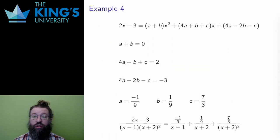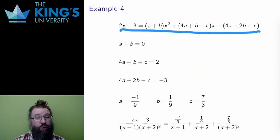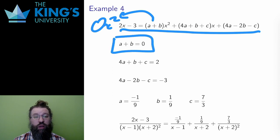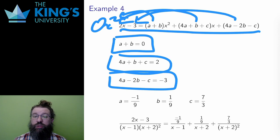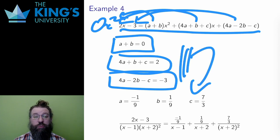Here is that equation of the numerators. I compare coefficients. There is no x squared on the left, so a plus b must be equal to zero for the x squared term. For the x term, 4a plus b plus c must be equal to two, and 4a minus 2b minus c is equal to negative three for the constant. I again asked a computer to solve the system with these three numbers as the result.